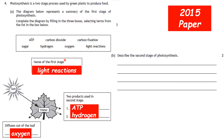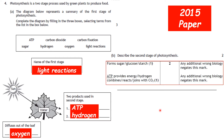Describe the second stage of photosynthesis for two marks. First point: glucose is produced. Second point: ATP provides energy for this to happen — or you could say hydrogen combines with carbon dioxide, using energy from ATP, in order to produce sugar. Mention ATP and glucose production for full marks.